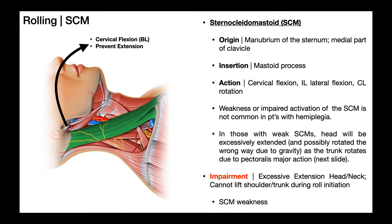The first muscle majorly involved in rolling from supine to sidelying is the sternocleidomastoid. I'm going to review a little bit of anatomy of this muscle because it can help explain how this muscle is involved in rolling. This muscle originates on the manubrium of the sternum and the medial part of the clavicle. You can see the sternal head and the clavicular head here. Both heads fuse into one larger muscle belly superiorly and insert on the mastoid process.